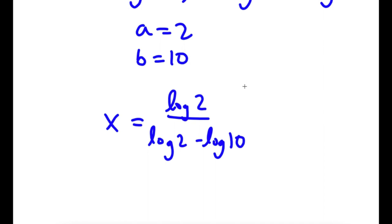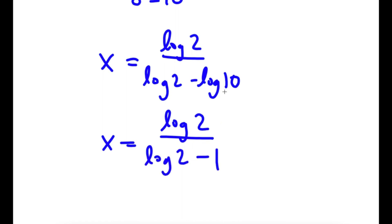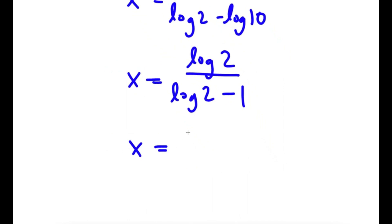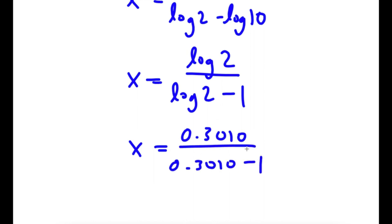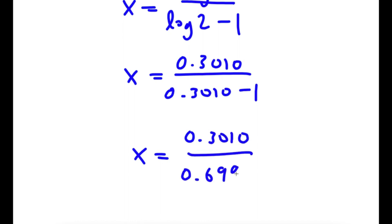Now, log 10, as we all know, is simply 1. So I have x is equal to log 2 over log 2 minus 1. Now, log 2 is equal to 0.3010. So I have 0.3010 over 0.3010 minus 1.